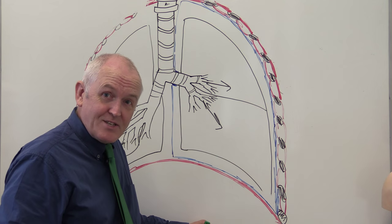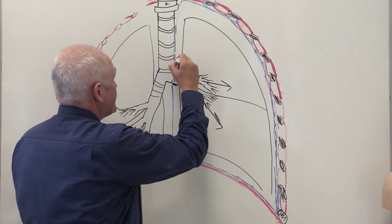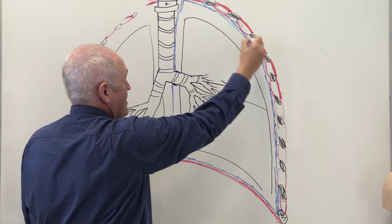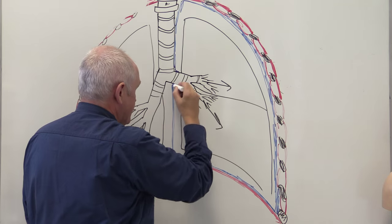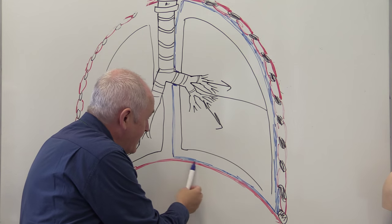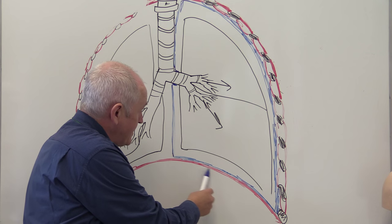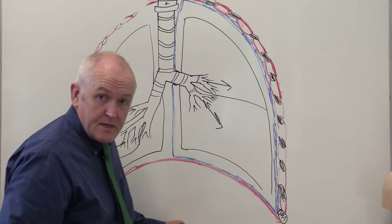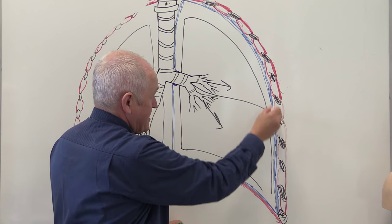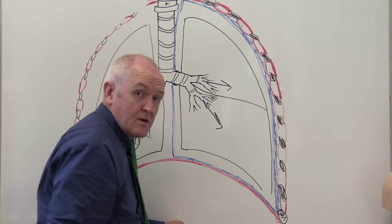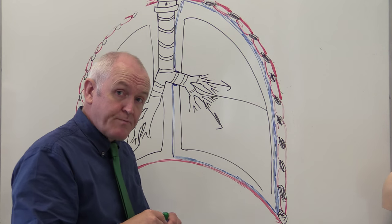Each lung is surrounded by its own pleural membrane, so there's a pleural membrane for the right and for the left. The parietal pleural membrane lines the internal surface of the chest wall and the surface of the diaphragm, and it is fixed. The parietal pleural membrane is adherent to, is fixed to the superior surface of the diaphragm. The same membrane, as it goes around the inside of the thoracic cavity, is fixed to the tissues of the chest wall, and it's very hard to peel away anatomically.